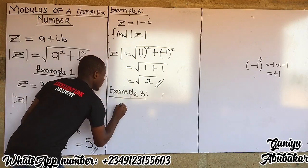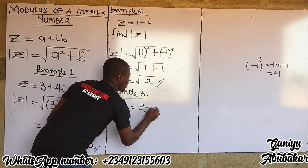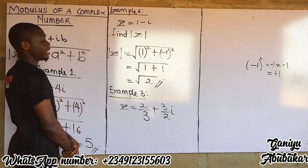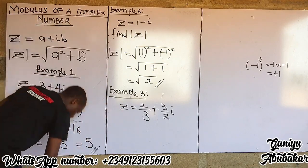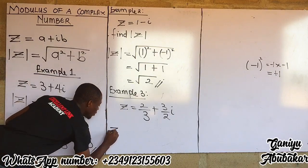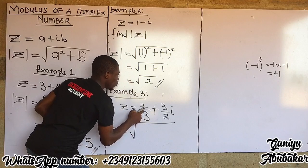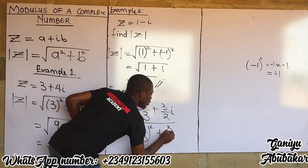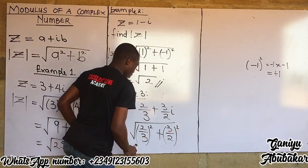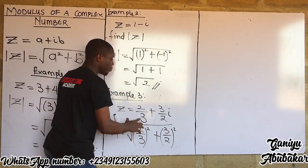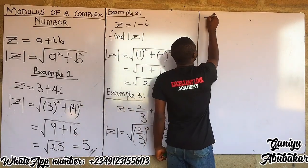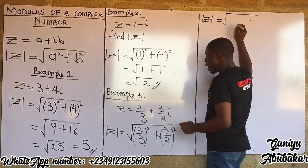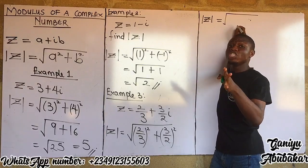Example three: given a complex number z equal to two-thirds plus three-halves i, find the modulus of this complex number. To find the modulus, z equals the square root of two-thirds all squared plus three-halves all squared. Proceeding from here, we apply the concept of indices.